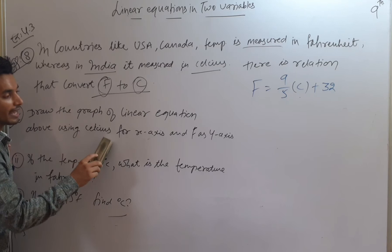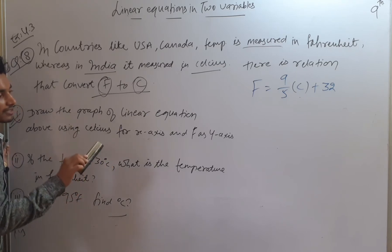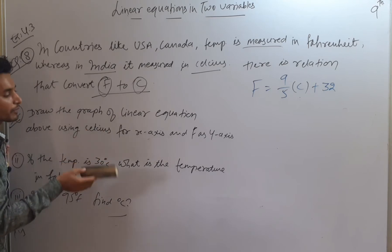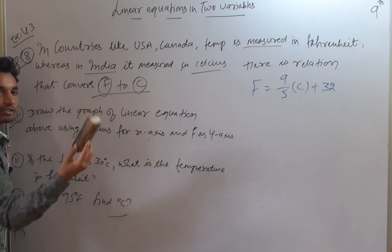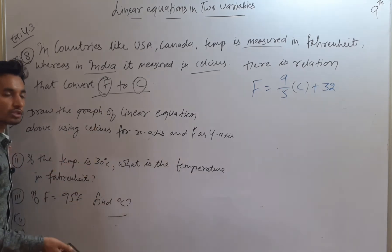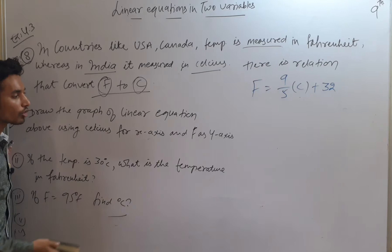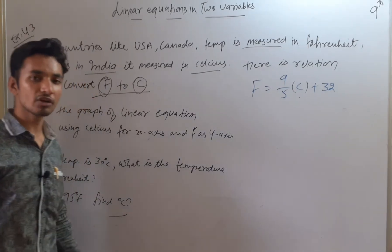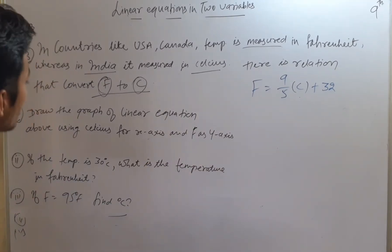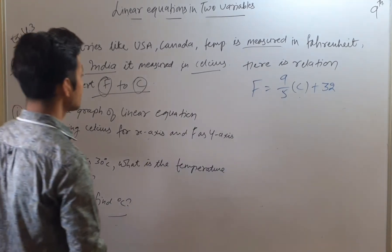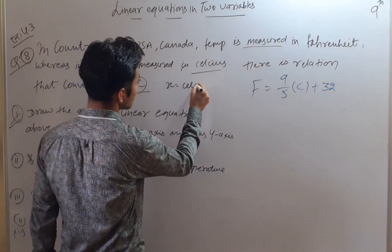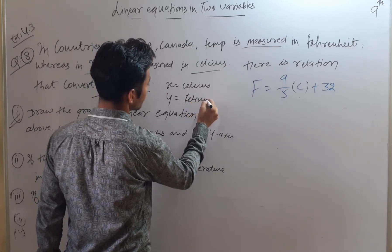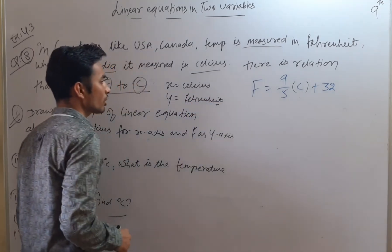So we assume X is degree Celsius and Y is Fahrenheit. If no specific axes are given we can choose freely, but here it is given that Celsius is the X-axis and Fahrenheit is the Y-axis. These two will be our variables.